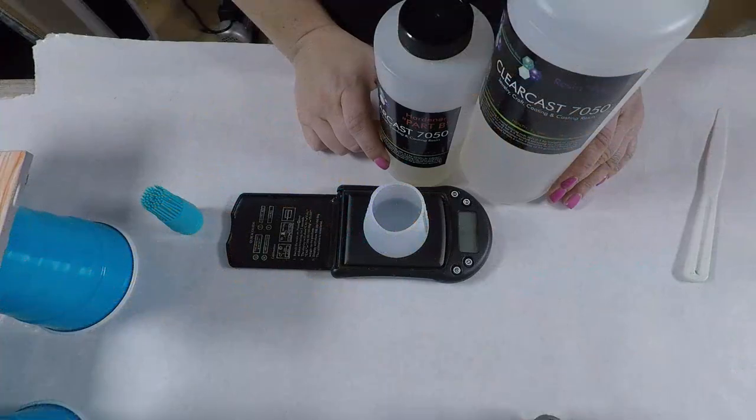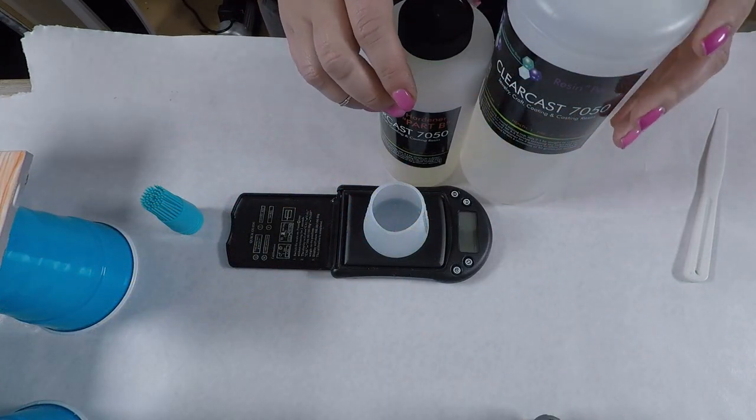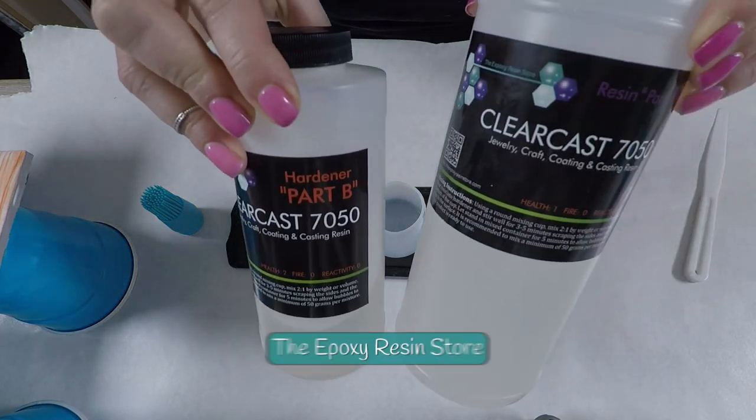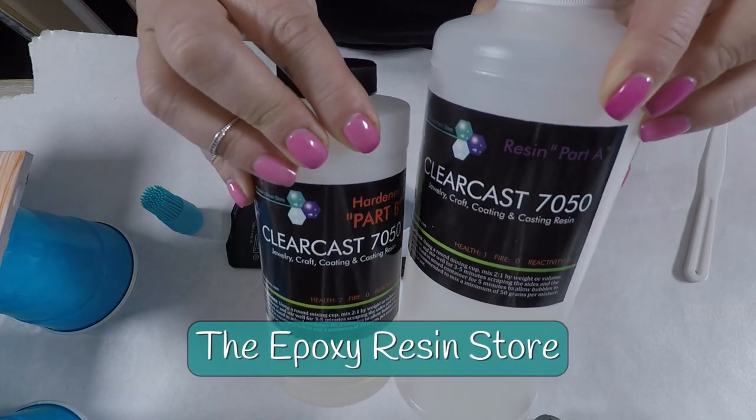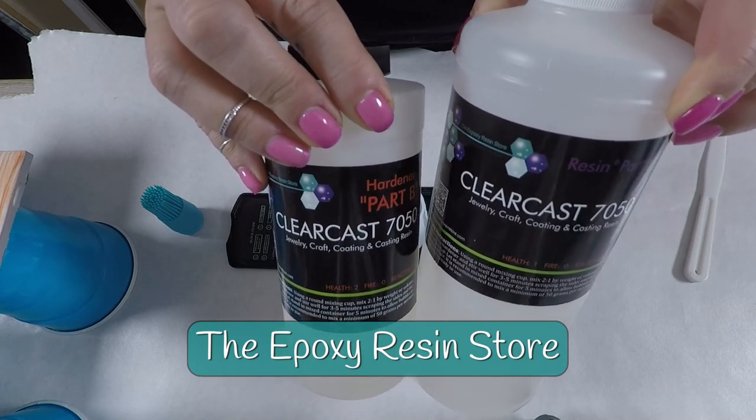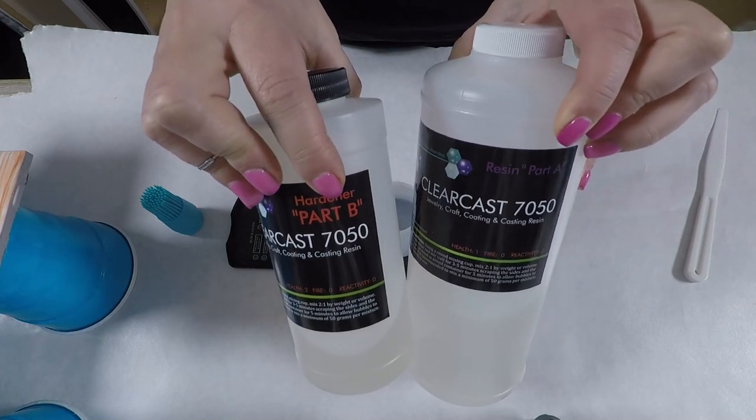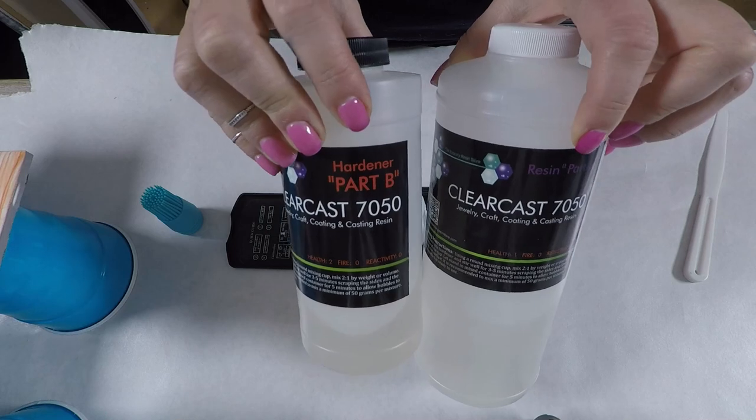For the resin, I'm going to be using this Clear Cast 7050. I got this from the Epoxy Resin Store. There are links below for them and a coupon code as well. This resin is a two-part epoxy resin with a two-to-one ratio, so two parts resin, one part hardener.